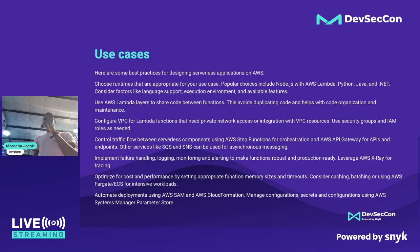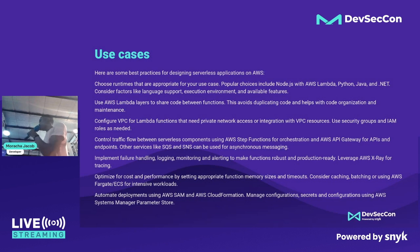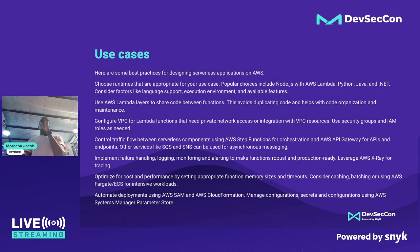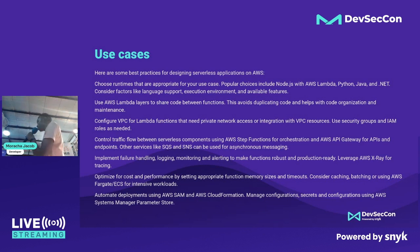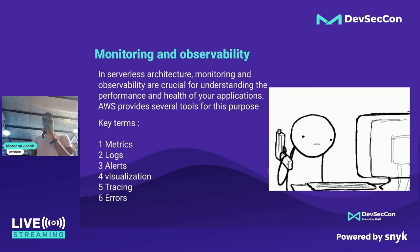Automate deployments using the AWS Serverless Application Model and CloudFormation. Use environment variables and store secrets using AWS Systems Manager Parameter Store — it provides an access key so only authorized functions can access those configurations. This acts like an authorization mechanism, ensuring configurations are safely stored and only accessible to the right services.